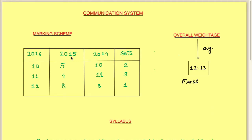Today we are going to start a lecture series on communication systems. Before moving toward communication systems, I want to give you an insight toward GATE levels as well as the marking scheme of previous years. In 2016, for Set 2 the marks were 10, for Set 3 the marks were 11, and for Set 1 the marks were 12.